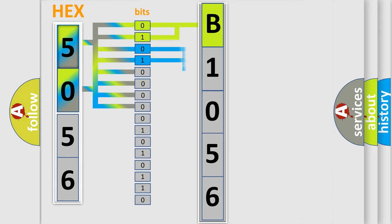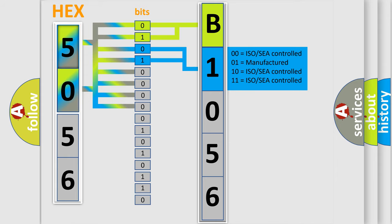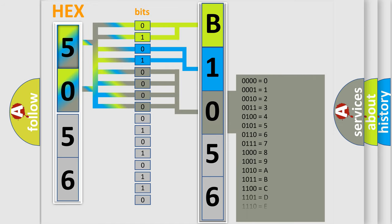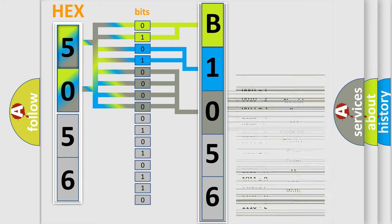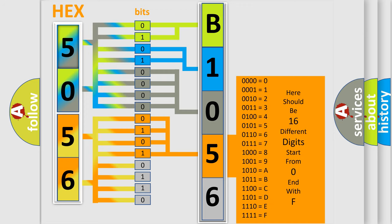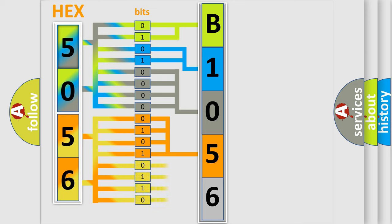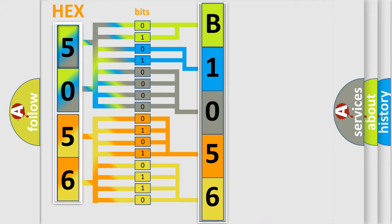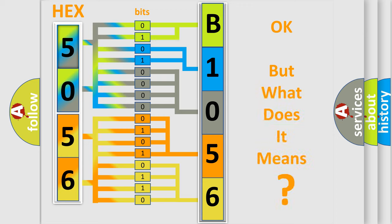The next two bits again determine the second character. The last four bits of the first byte define the third character of the code. The second byte is composed of a combination of eight bits. The first four bits determine the fourth character of the code, and the combination of the last four bits defines the fifth character. A single byte conceals 256 possible combinations. We now know in what way the diagnostic tool translates the received information into a more comprehensible format.